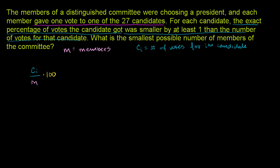The percentage was smaller by at least one than the number of votes for that candidate. So that means 100·c_i / m is less than or equal to c sub i minus 1. This is telling us that the percentage of votes any candidate got is less than the number of votes they got minus one. And frankly, that's the hardest part of this problem — understanding what that sentence is even saying.